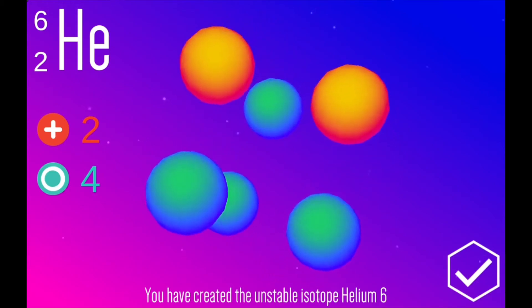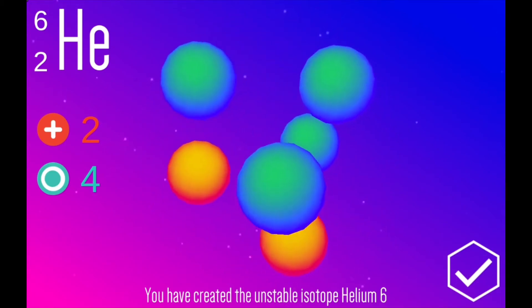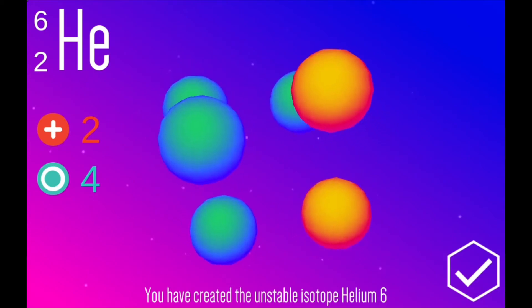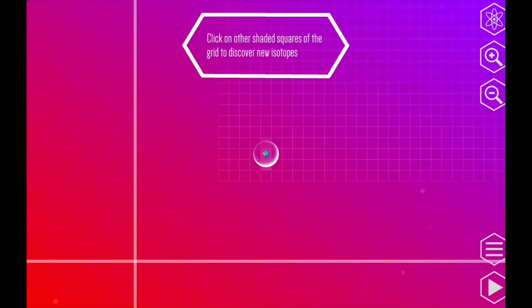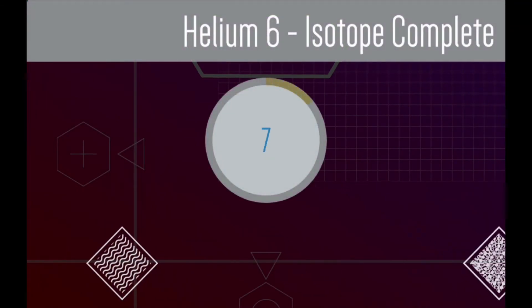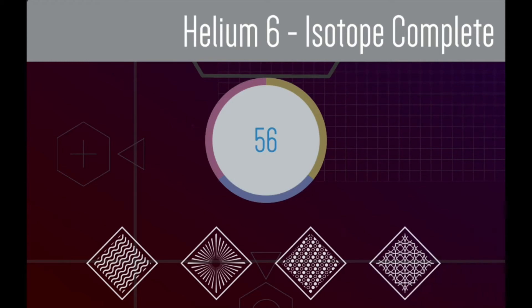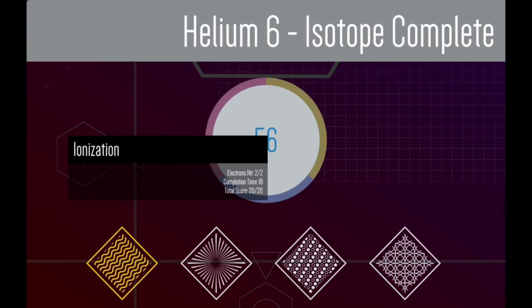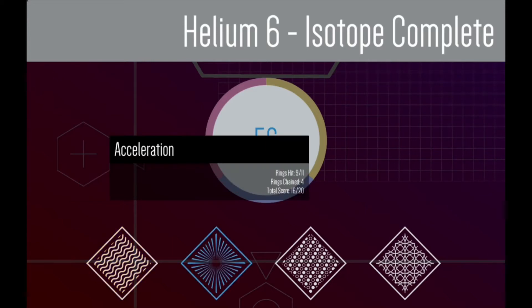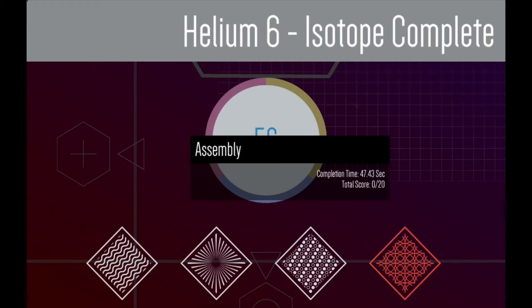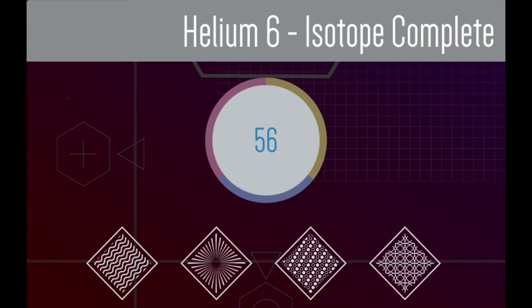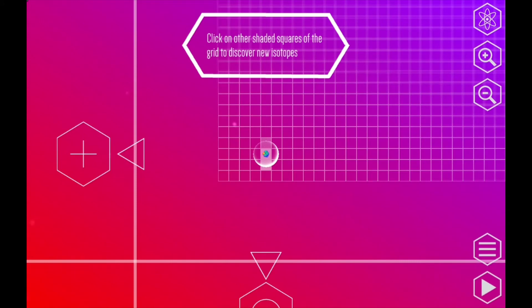They even tell you what you made — you can admire your handiwork here. If you click the big check mark, that'll take you out of the screen and into the scoring, which shows you the four different phases: ionization, acceleration, collision, and assembly. This is the total score in the middle, but you can tap on any one of the phases to see how well you did. I didn't do so well on that last one, but hey, it's a tutorial. Tap on the total score and it takes you back to the big chart.